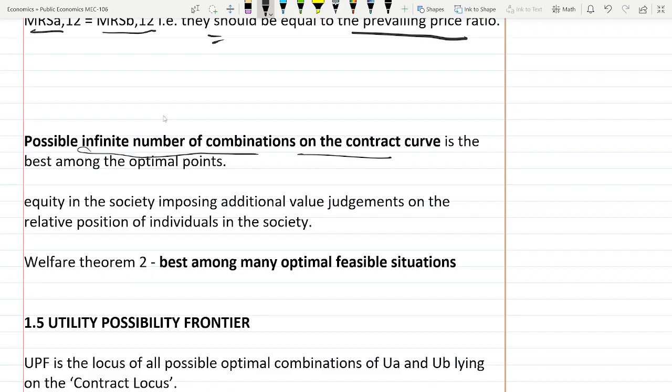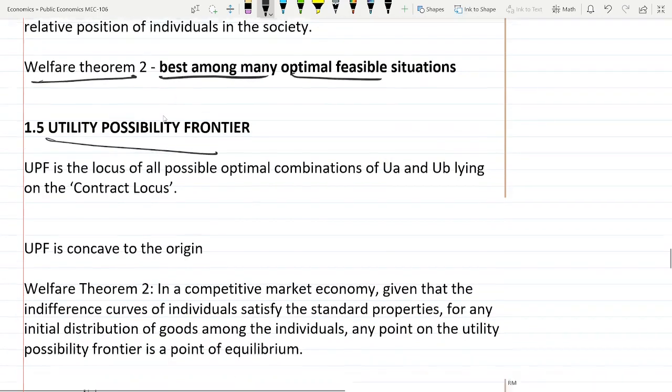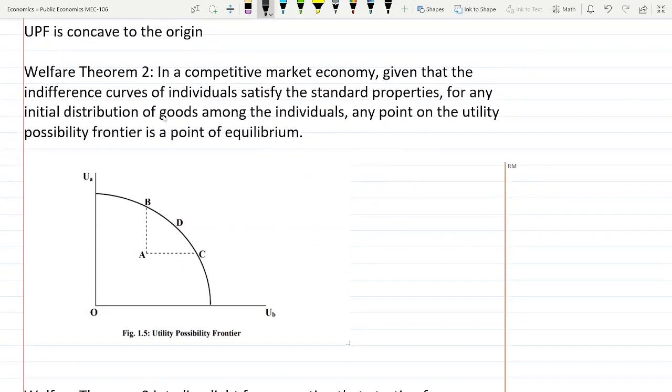Which point is the best among all these optimal points for the society? The answer lies in welfare theorem 2 and the utility possibility frontier. So what is the utility possibility frontier? This diagram is the utility possibility frontier, UPF. On the x-axis is the utility of B and on y-axis utility of A.